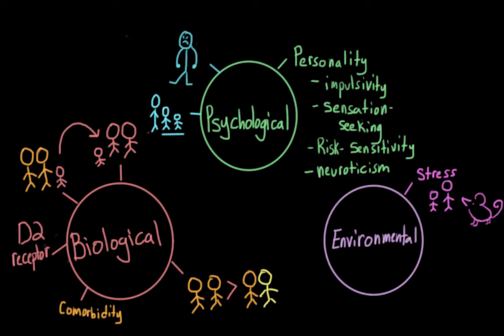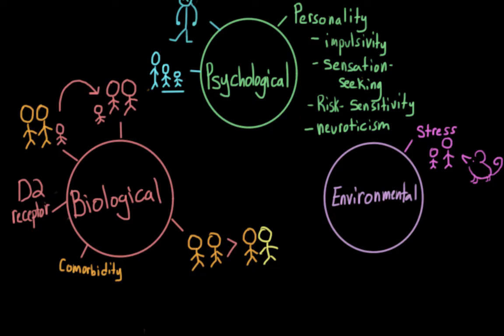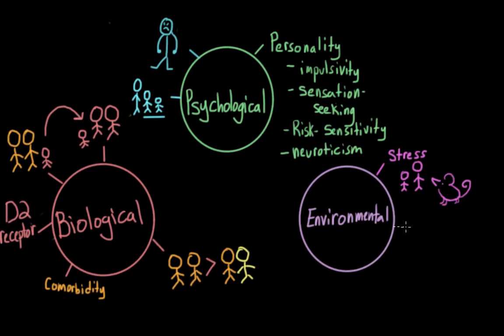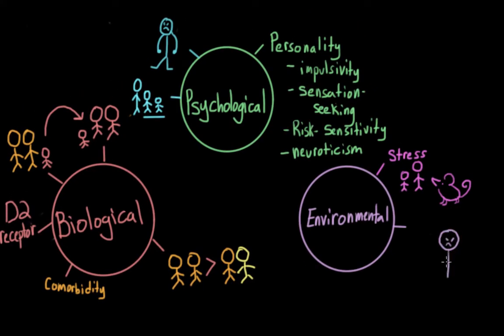And before, we talked about how evidence from family, twin, and adoption studies all seem to show that genes play a role in developing addiction. But it is also possible that there might be an added environmental effect as well in the form of modeling and imitation. So if a child watches a parent drink or use other substances as a coping mechanism, they might be more likely to model this behavior for themselves when they face stressors in adulthood.